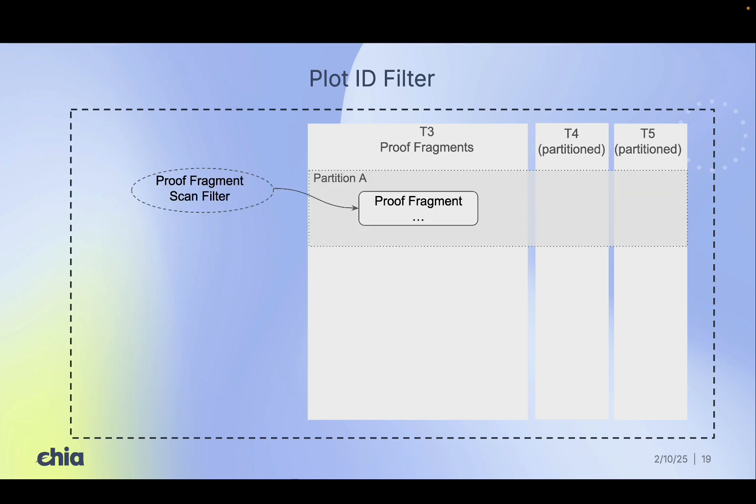Next, we use the proof fragment scan filter to occasionally pass a proof fragment within a specific challenge defined range. The scan incurs just one disk seek, and like the plot ID filter, it helps to minimize further disk accesses in the next step of the proving process.